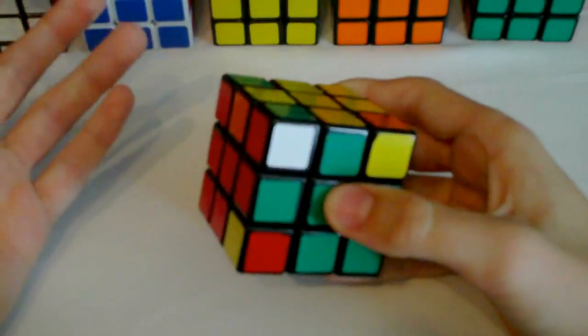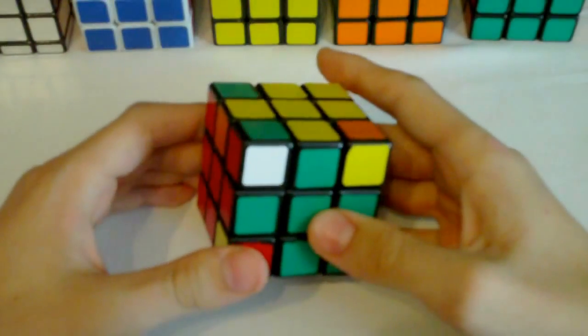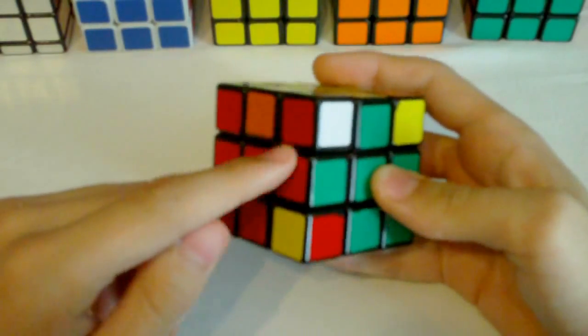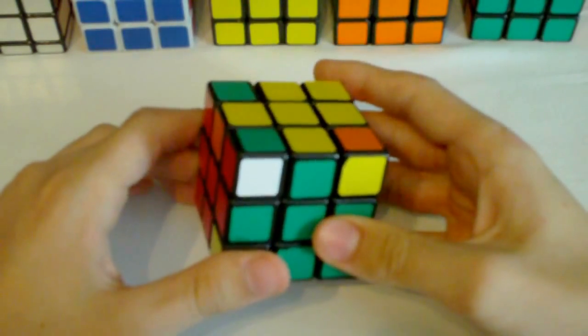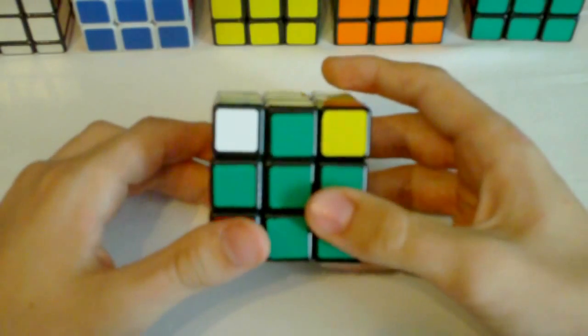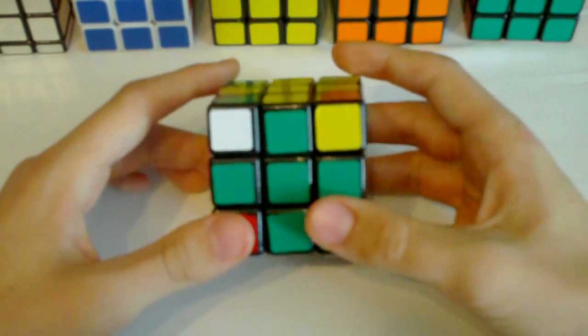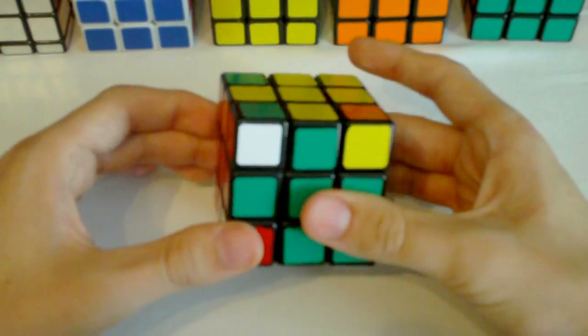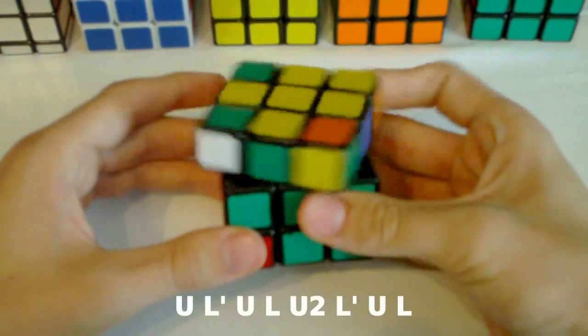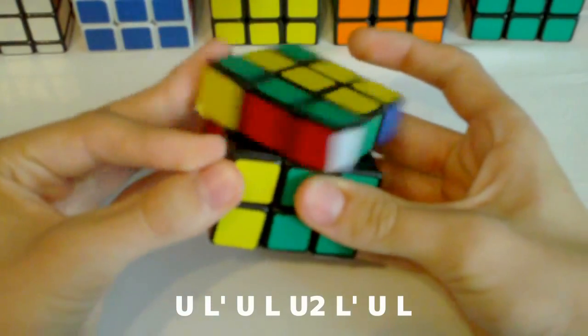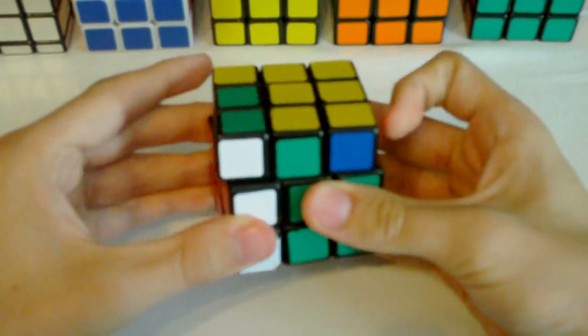Alright, this is just a mirror of the previous case. Everything is mirrored. You have these two colors matched up on the left side this time and the white sticker is in the top left of the front face. So you do this algorithm: U L' U L U2 L' U L.